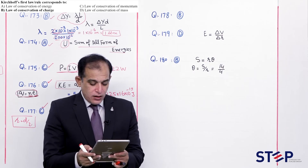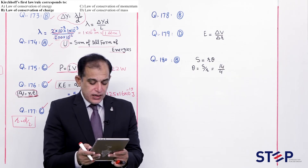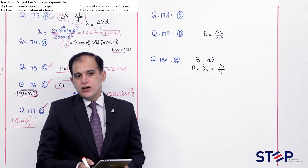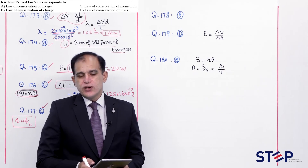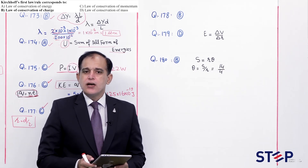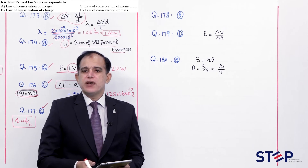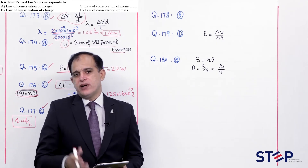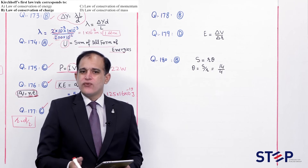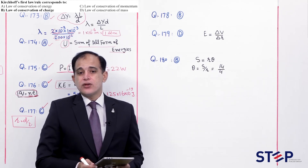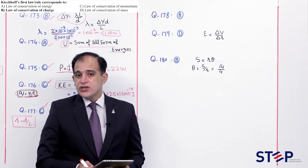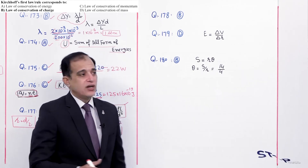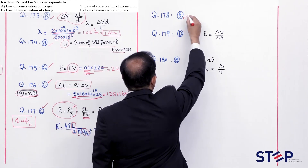Question number 178: Kirchhoff's first law corresponds to which law? Kirchhoff's first rule: sum of currents towards a point equals sum of currents away. Current = rate of flow of charges. This is manifestation of law of conservation of charge. Correct option: Beta.